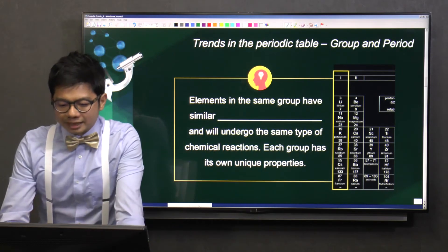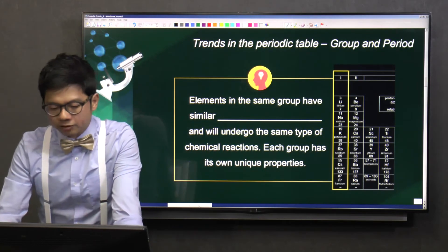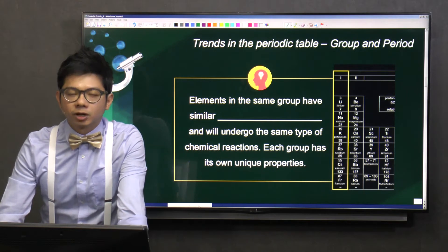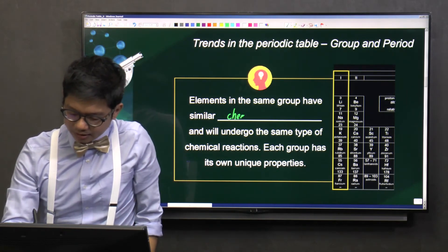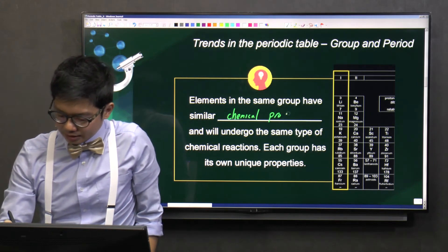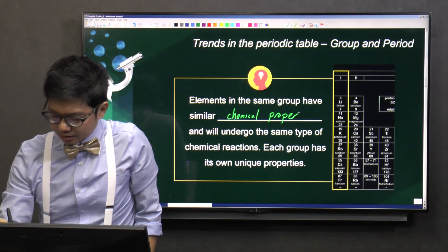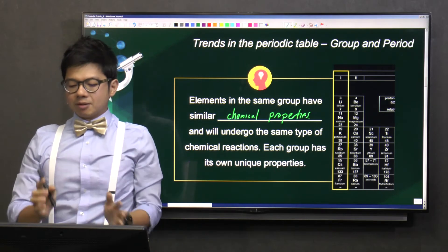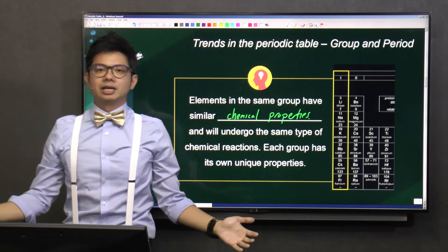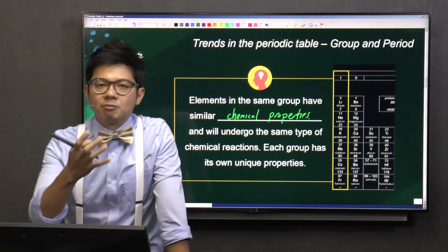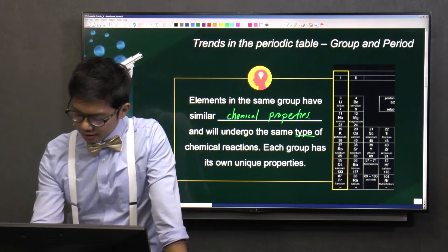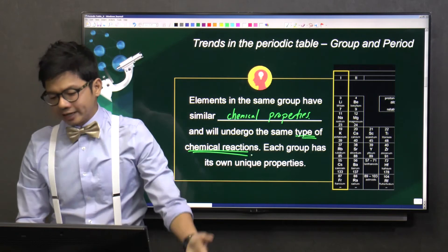So elements, they are placed in the same group for a reason, because they have the same chemical properties. Same chemical properties, what does it mean? Meaning they will undergo the same type of chemical reaction.